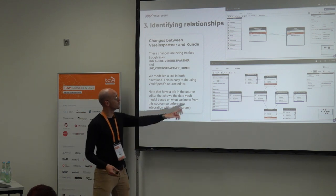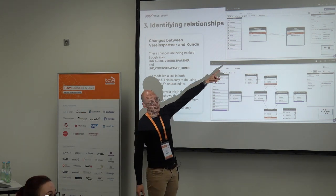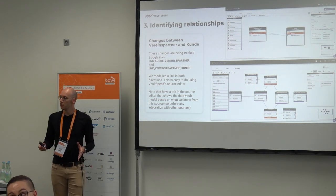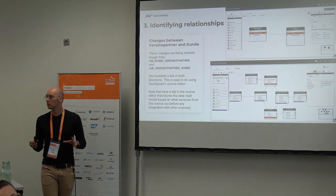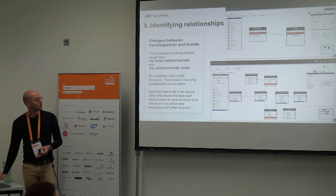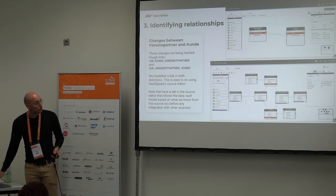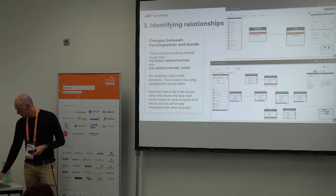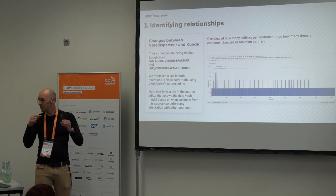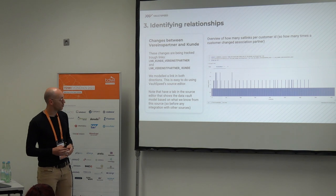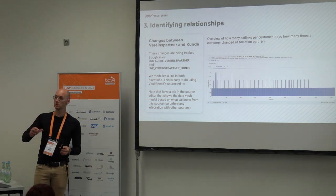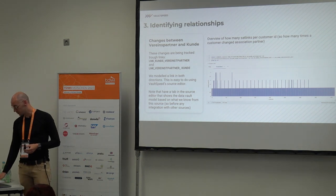In our source modeler you can directly derive a Data Vault model based on a single source to get an idea of what it will look like before integrating with other sources — useful during modeling. In the data, I found a few occurrences of customers who changed association partners across three loads, all captured in the history of that link. There were also customers without a Vereinspartner — two orphan records — with the others distributed across the first, second, and third loads.